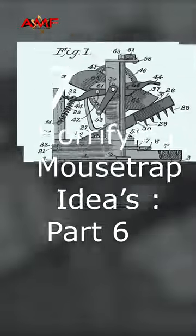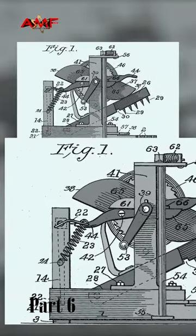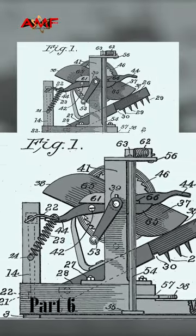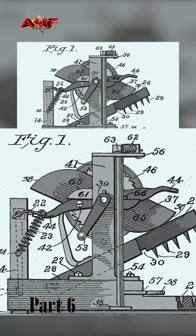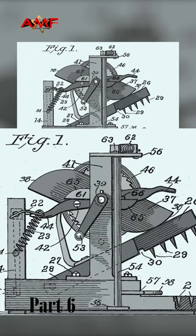7 Horrifying Mousetrap Ideas, Part 6. This automatic rat trap could destroy an entire species. It's frightening to look at. How? This trap would lure in a rat, capture it, and then shoot it out again. Number 57 is the ejector.